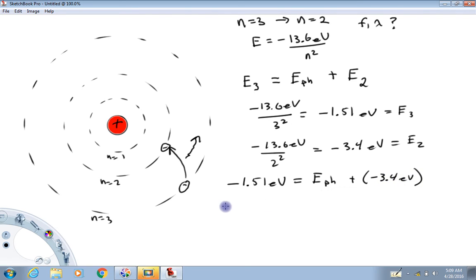So what I'm going to do now is I'm just going to take these values and put them into this relationship. So E3 is minus 1.51 eV. And that has to equal the energy of the photon plus energy two, which is minus 3.4 eV. And now it's a pretty easy equation here to solve for the energy of the photon. If I solve that for the energy of that photon, I get 1.89 eV. So the energy of the photon given up is 1.89 eV. So this is how we find the energy of the photon given up when we go from a higher orbit to a lower orbit. We just write out a simple energy balance.